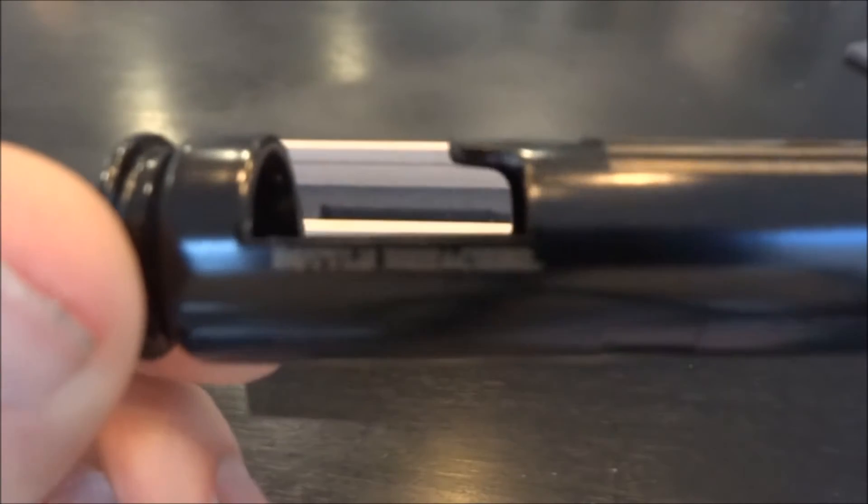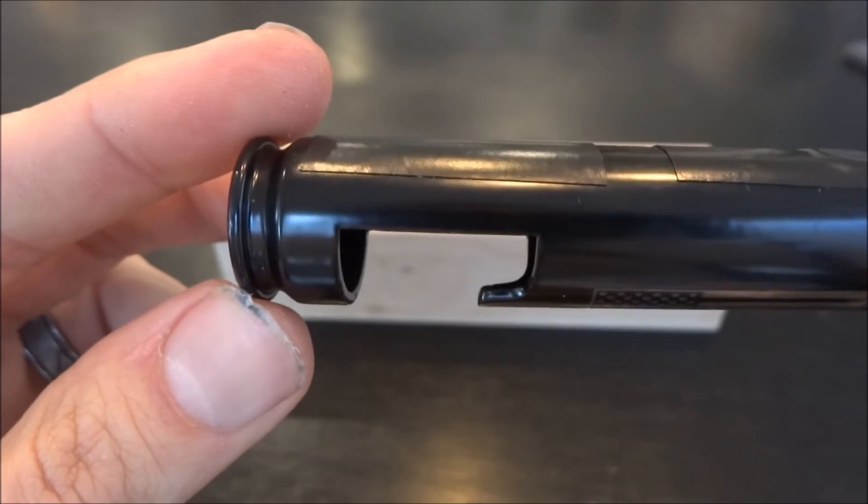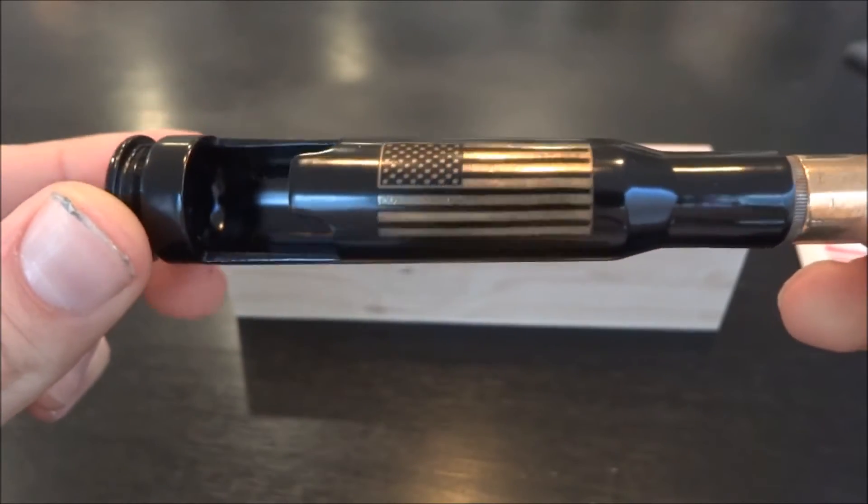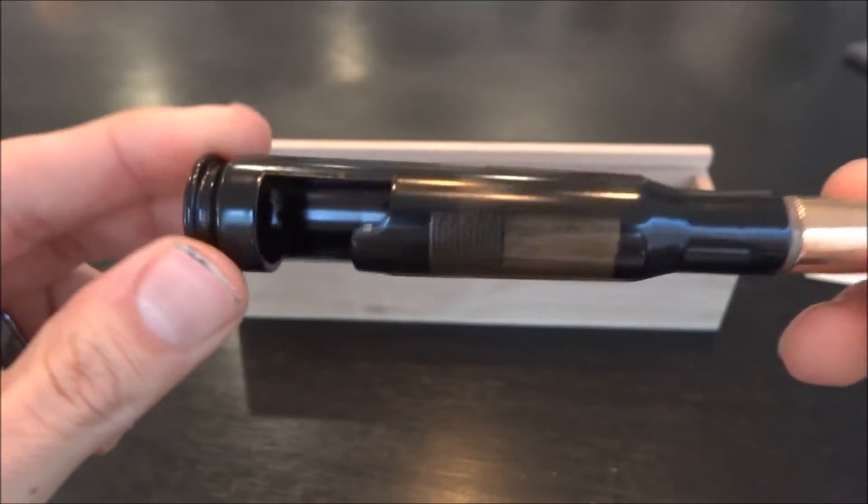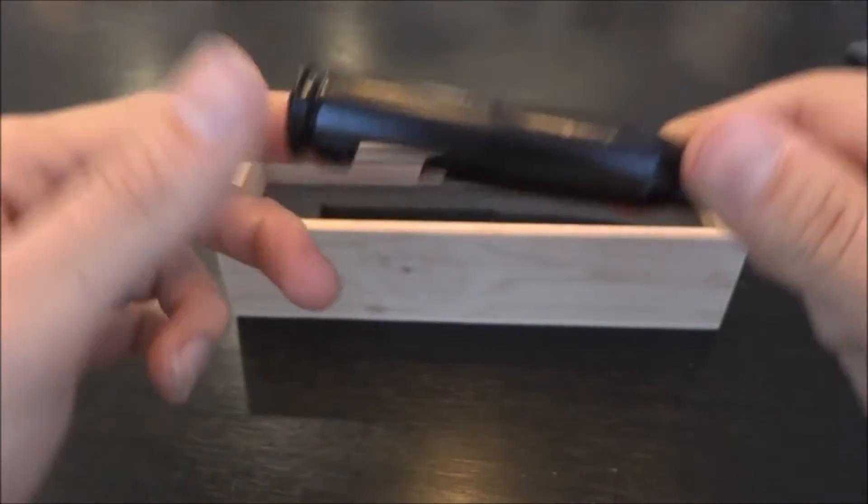And right here, it's got a cool little cutout. You might ask, what in the world is that for? What the Bottle Breacher makes is they make products that breach bottles. Pretty much, it's a fancy bottle opener. Ka-ch! Like that.